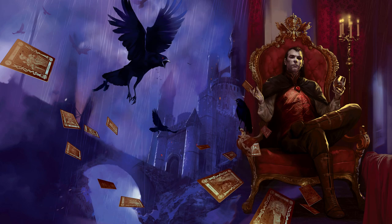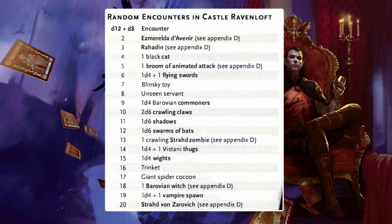Random Encounters: The first time that the characters enter a castle area that isn't otherwise occupied, check for a random encounter. Also check for a random encounter every 10 minutes the characters spend resting in the castle. In most circumstances, a random encounter occurs on a roll of 18 or higher on a D20. The following are random encounters that may occur in Castle Ravenloft.